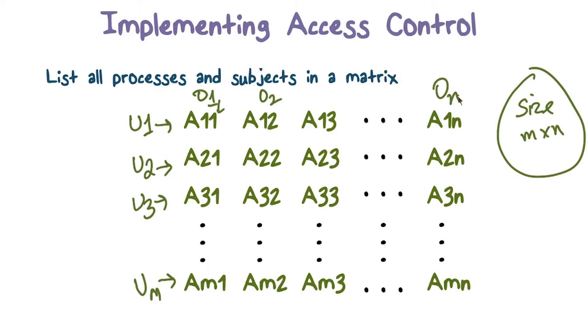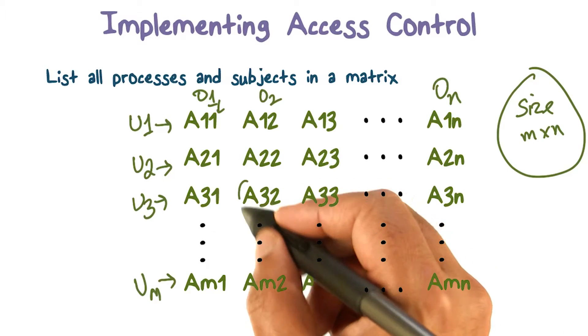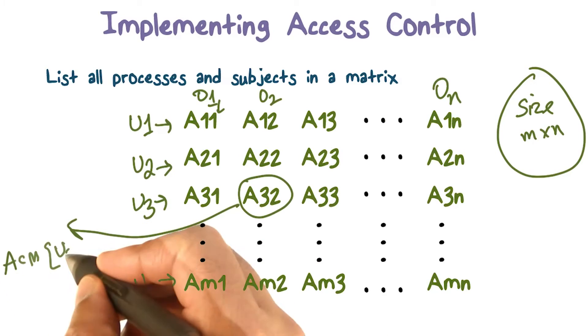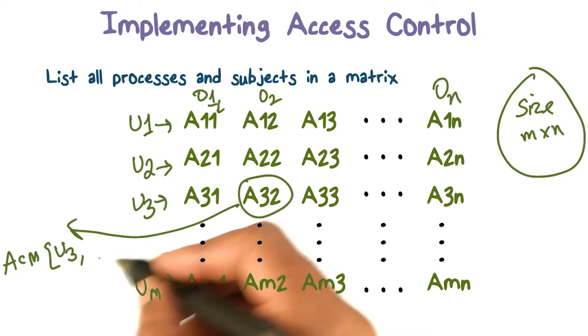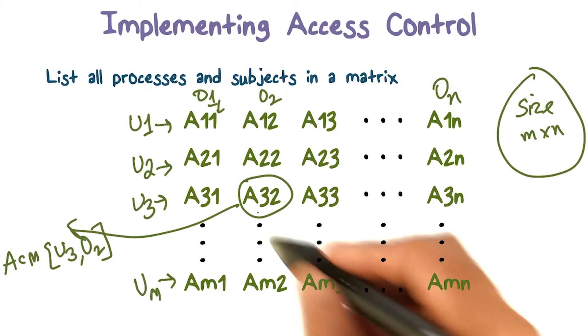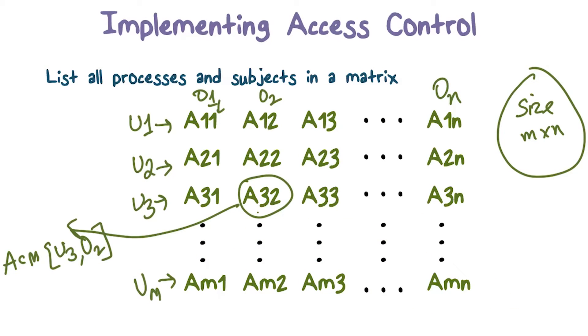We are talking about ACM[u,o]. That's going to be some entry like this. If you take a look at it, this is ACM 3,2, because it's user 3 and object 2. So this entry A32 describes how user 3, or U3, is allowed to access object O2. If it happens to be a file, it could be read access, write access, or execute access.